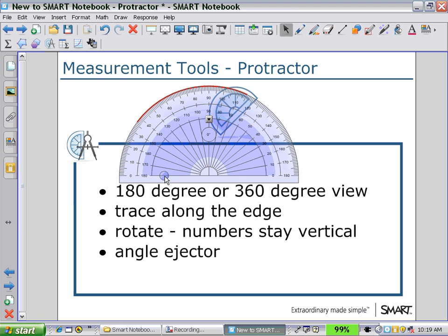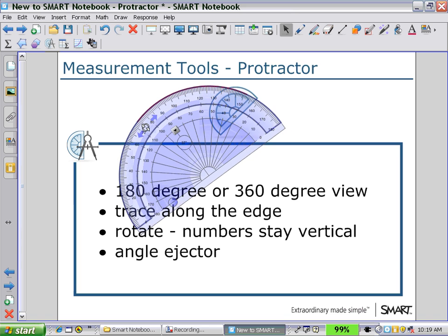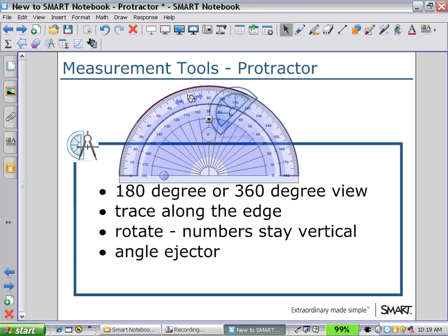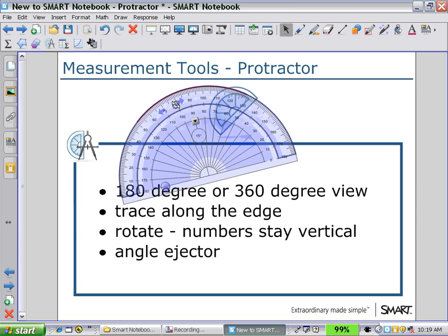We can rotate the protractor by holding the outer circle of numbers. And as I rotate, you see the angle displayed in the center circle as our angle of rotation, and notice that it stays vertical so that we can read our angle measure quite easily.